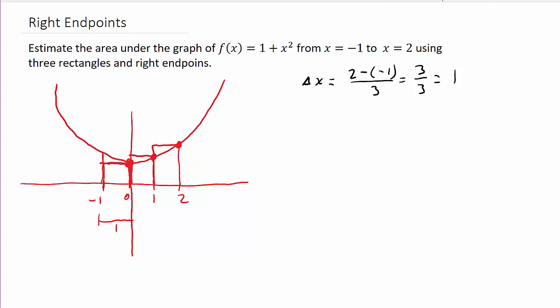So we need to evaluate f of zero, which that's one plus zero squared, which is one. Then we need f of one, which would be one plus one squared, which is two. And then we need f of two, which is one plus two squared equals four. Okay. And by the way, this is right endpoints. I'll have some other videos, left endpoints and midpoints, so you can check those out too.